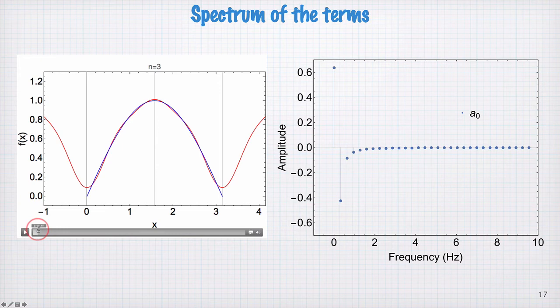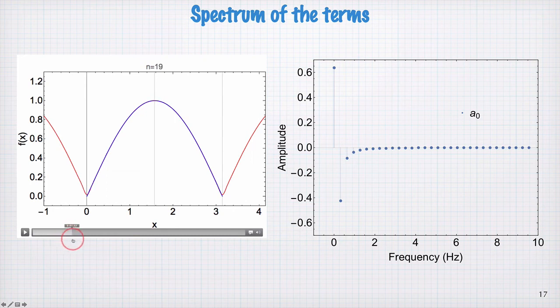That's the n equal to 1 term, n equal to 2, 3, 4, 5. Already by the time we get to n equal to 20, it's very close to the blue curve.